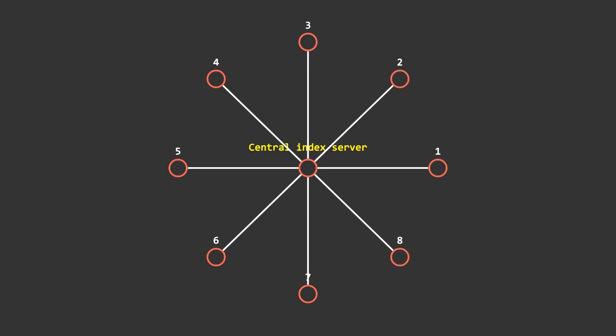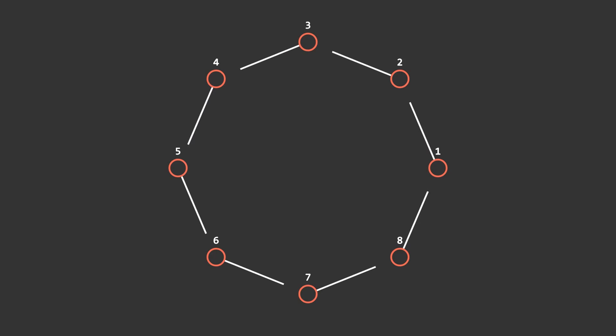With a distributed hash table, there is no need for a central indexer. In a DHT, each node connects to only its direct neighbors, ensuring the system is decentralized. With that out of the way, how does a DHT work with retrieving and inserting values?